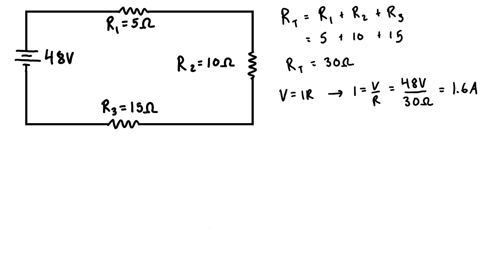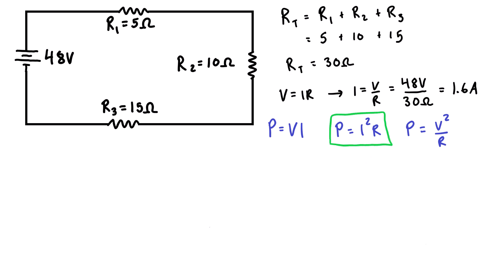Now we write out our power formulas: P equals VI, P equals I²R, and P equals V²/R. We want to find the power consumed by each resistor. We have the current through each resistor and the resistance of each resistor, so we'll use P equals I²R. If you had voltage drops and resistance you could use V²/R, or if you had voltage drops and current you could use VI — all yield the same answer depending on which variables you have.